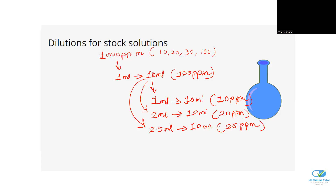This is a very easy flowchart. Also, to show how to make 1000 PPM from scratch: take 10 mg of drug and dilute it to 10 ml — that gives you 1000 PPM.